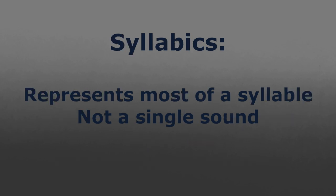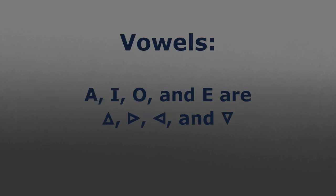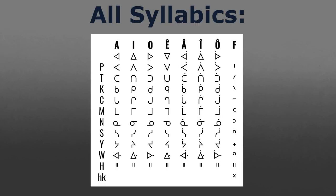When talking about the syllabics, you must understand that the syllabics represent most of a syllable, not just a single sound. Starting with the vowels, they are E, O, A, and Ê. You might notice that they're all the same symbol, but they look in different directions. This is the same for most symbols — the direction they are facing determines the vowel that follows. If they have a dot above, they are long vowels, other than Ê, which is always long and doesn't have a dot.